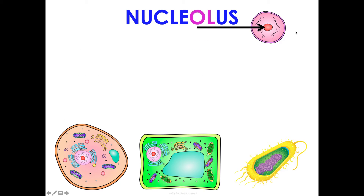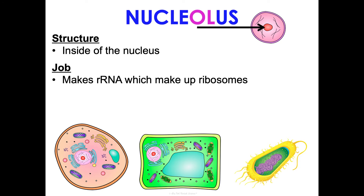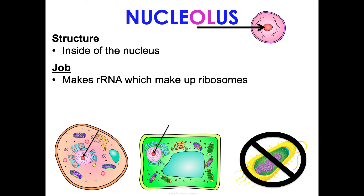Next is the nucleolus, which is inside the nucleus. Its job is to make rRNA — ribosomal RNA — which makes up ribosomes. We'll talk more about this in unit four genetics. It is not found in prokaryotes because they don't have a nucleus, so they can't have a nucleolus either.